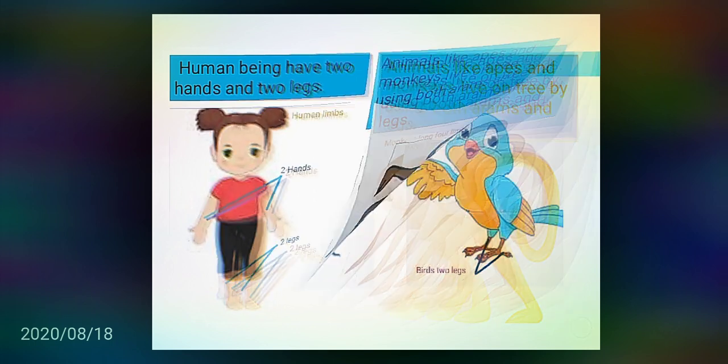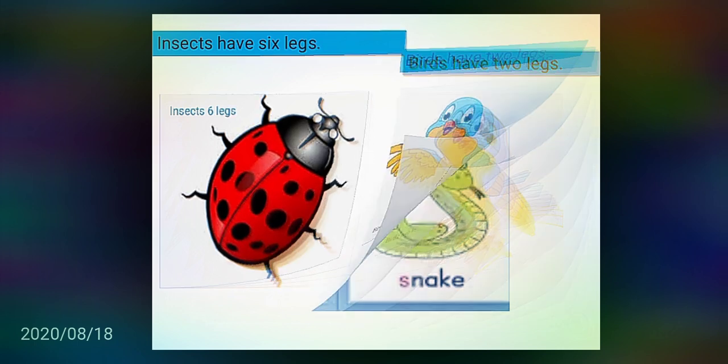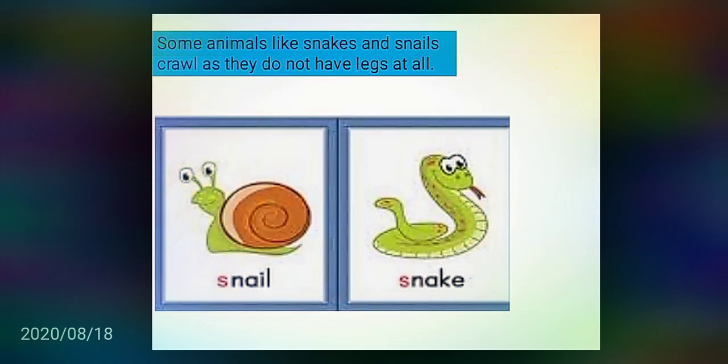Insects have six legs. Birds have two legs, as you can see in pictures. Some animals like snakes and snails crawl as they do not have legs at all.